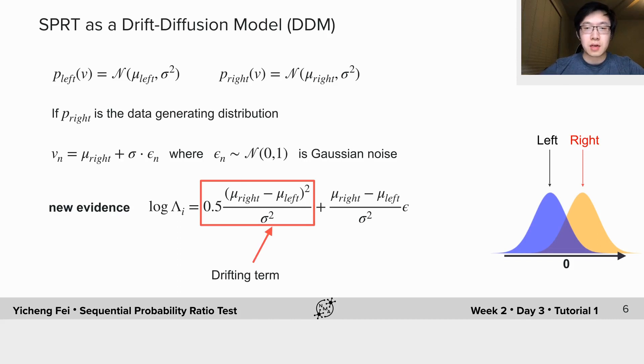The first term is called the drift term because without noise, the cumulative evidence will consistently drifting towards the positive direction under this term. The second term is called the diffusion term because it's zero-centered, so without drifting, there is equal probability to go left or right. Therefore, the SPRT with linear measurements of same variance can be expressed as a drift-diffusion model.